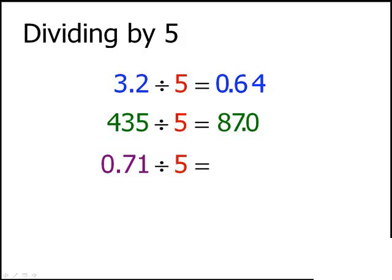One last example. First, we'll take our dividend of 0.71 and double it to get 1.42. And now we'll take our decimal point and move it one space to the left to get 0.142.